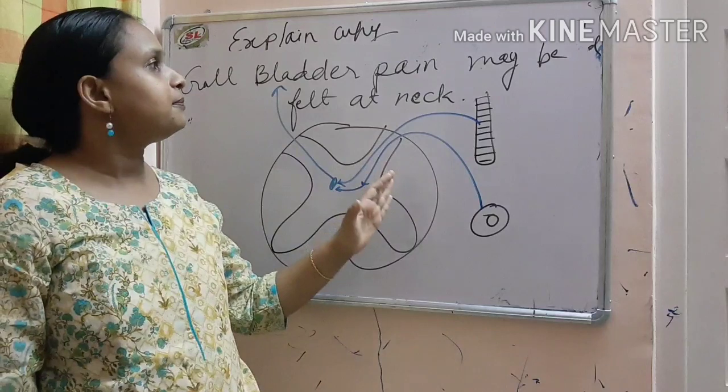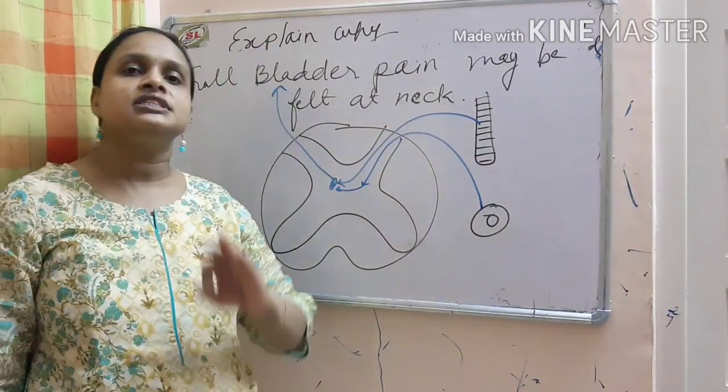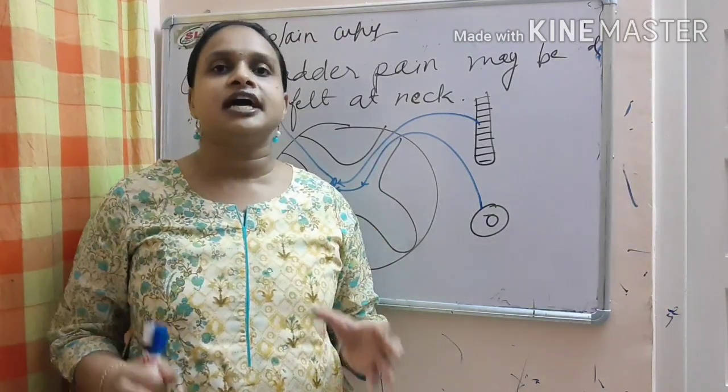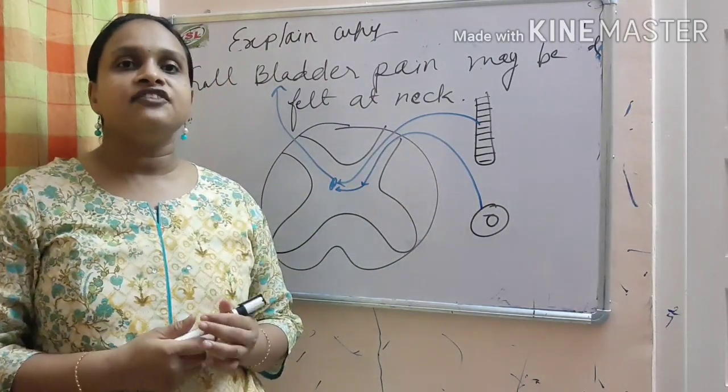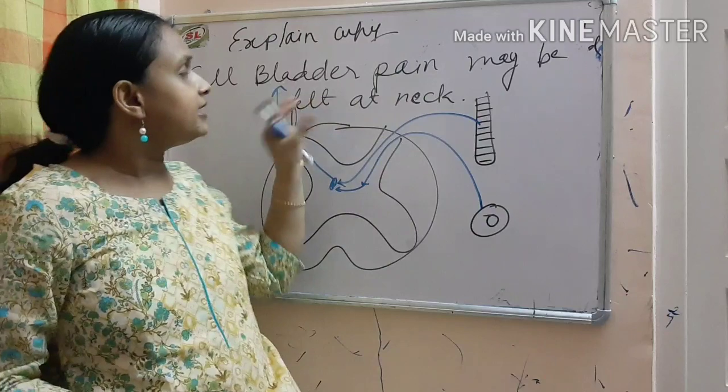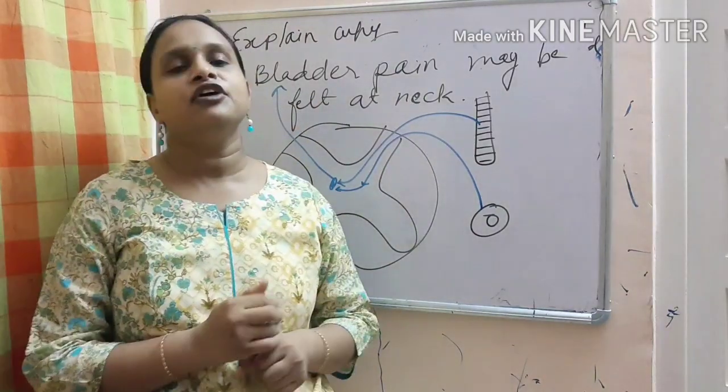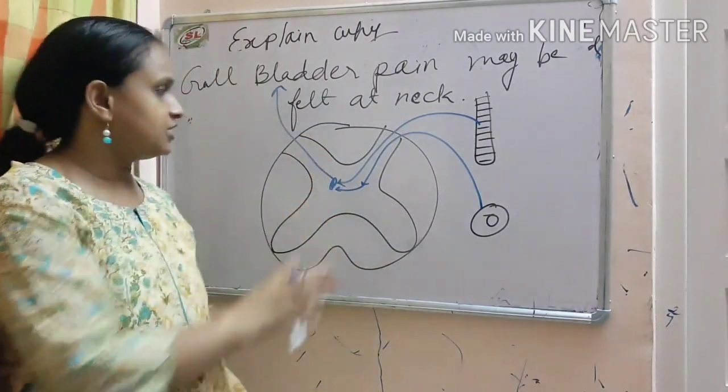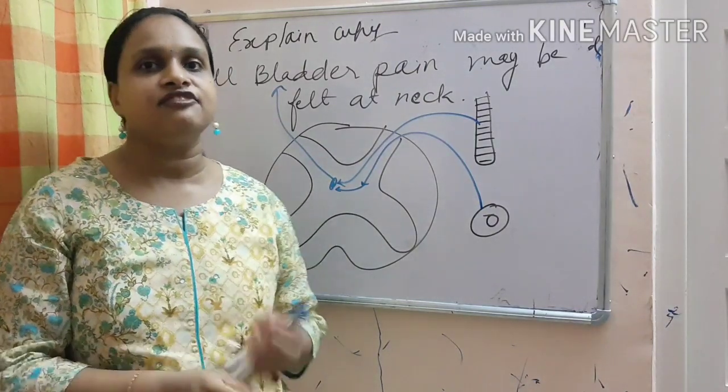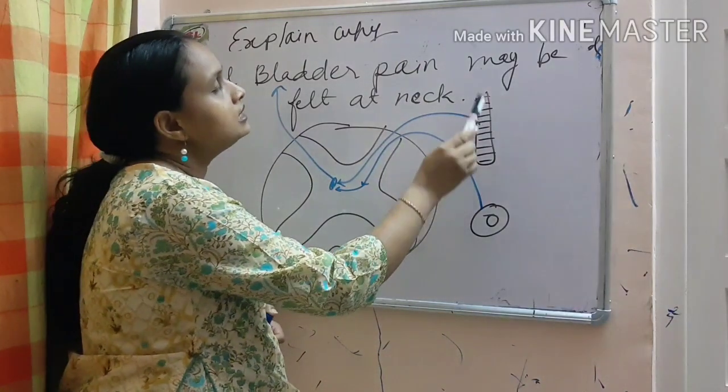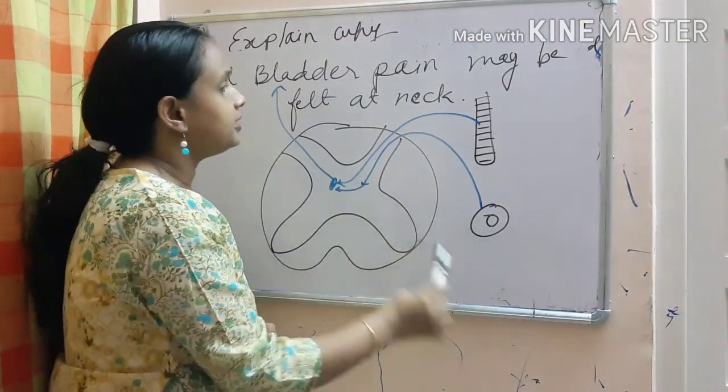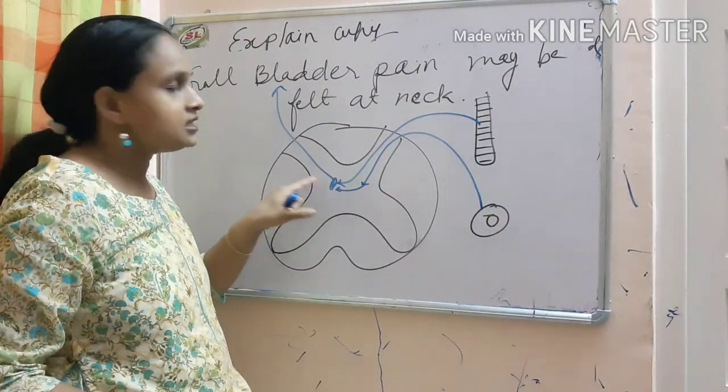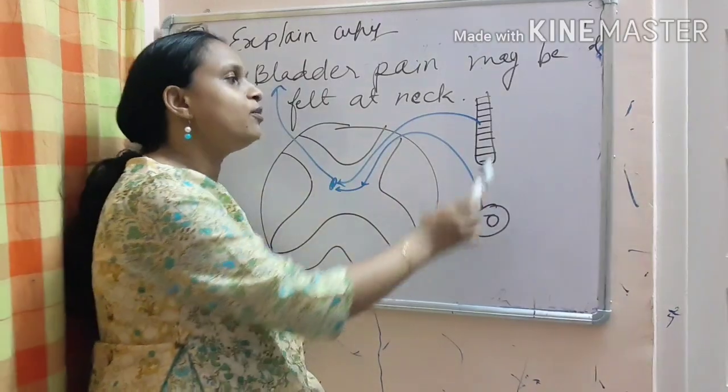In the gallbladder pain, it maybe felt at neck because of the same referred pain because I have already told you which structures are made from the same embryonic segment. They have referred pain phenomena. In this gallbladder and neck structure, both are evolved from the same embryonic segment. So, there is some nerve supply crossing over. One is facilitation theory and one is convergence theory. In this, the nerve is coming from the skin of the neck and the nerve is coming from the gallbladder.